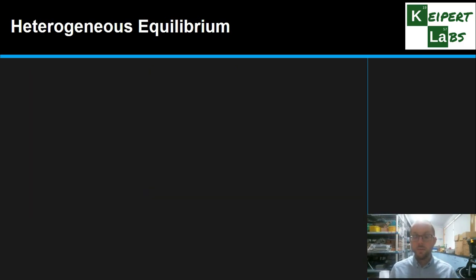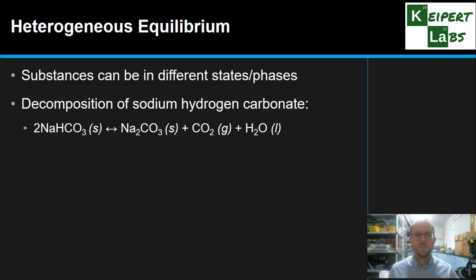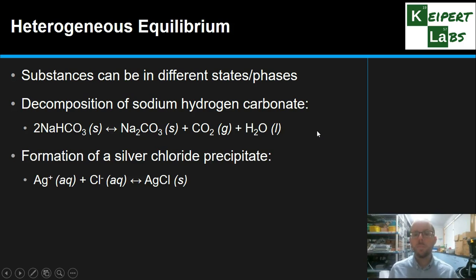So if homogenous means they're all in the same phase, then by logic, heterogeneous means that substances are in different states or phases. Now they're not necessarily all in different states, but they're not all the same. That's the difference. So the decomposition of sodium hydrogen carbonate or sodium bicarbonate, we have solids and we have gases and liquids in equilibrium with each other. We've got a solid on the left, but we've got a mixture of all three states on the right. The formation of a silver chloride precipitate, we've got an equilibrium between aqueous ions and a solid compound. So they are in different states, different phases. So the different subscripts that we have here will be different across the equilibrium.